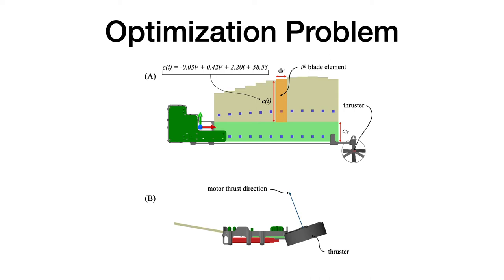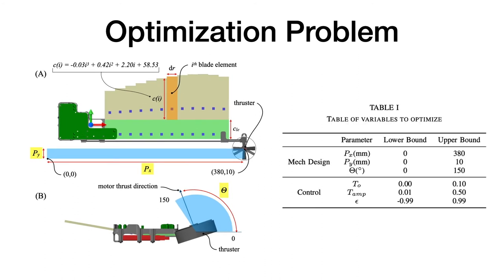So here, the variables for mechanical design to be optimized are px and py, which define the location of the thruster, and theta, which defines the angle at which the thruster is pointing. This table here gives the upper and lower bounds of each parameter.